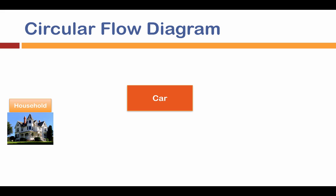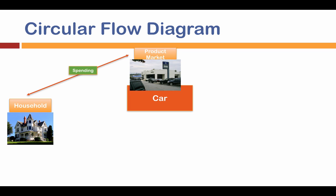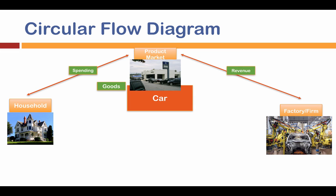First, you have your household — where you live. From your household, you work your way up and go to a product market, maybe a car dealership. You spend money on a car, and in exchange you get a car. I go to the dealership, give them money, they give me a car. I may also go to a financial institution to get the money to pay for the car. That car came from a factory or firm — the dealership didn't make the car there, so the dealership had to go through a factory and pay the factory some revenue in order to get the car.